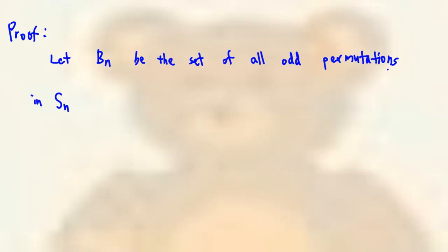To start with the proof, I let B sub n be the set of all odd permutations in S n.